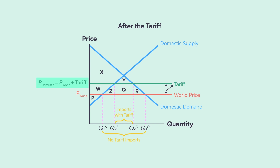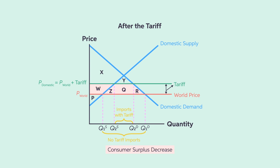Trade makes domestic sellers better off as the producer surplus increases by the area W. However, it makes domestic buyers worse off as the consumer surplus decreases by the area W plus Z plus Q plus R.